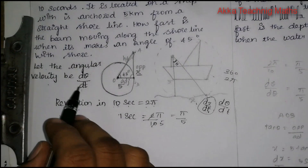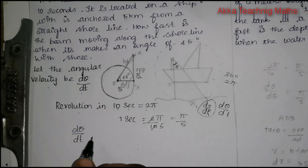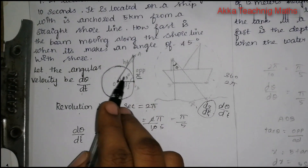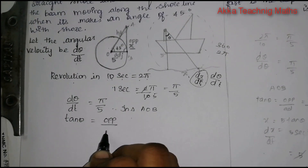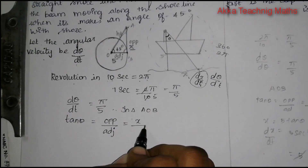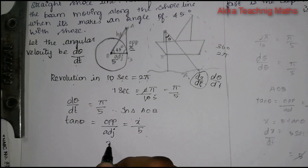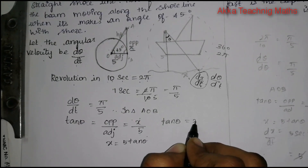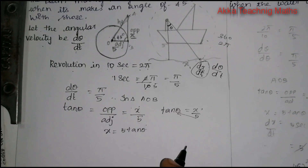Now we relate x and θ using the triangle A, O, B. Using tan theta equals opposite by adjacent: tan θ = x/5, so x is equal to 5 tan θ. Now we differentiate with respect to t to find how fast x is moving. Differentiating x = 5 tan θ gives dx/dt = 5 sec² θ times dθ/dt.